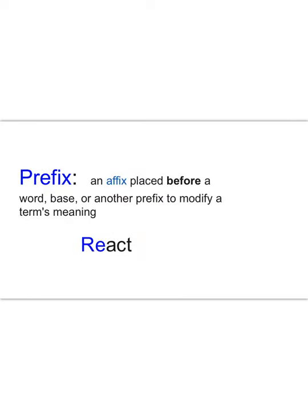The first affix is called the prefix. It's placed before the word or the base, or another prefix, to modify a term's meaning. You can have more than one prefix in a word. In the case of 'react,' it means to act again, because 're-' means to do something again — like to re-read, re-cook, re-think.